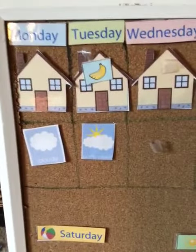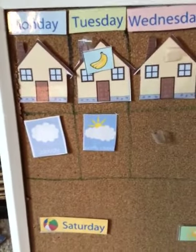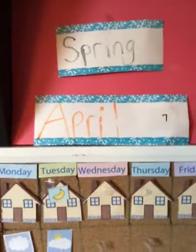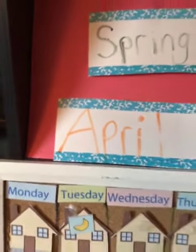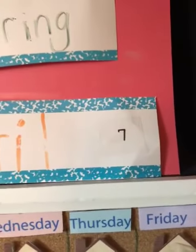Today is Tuesday. The weather is partly cloudy. The month is — what month is it? It starts with the letter A. April. It is April 7th, 2020.